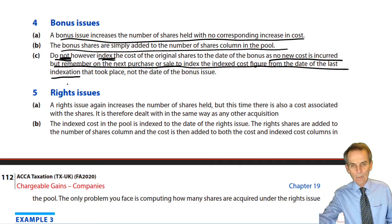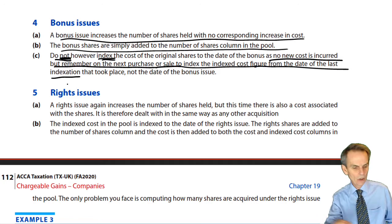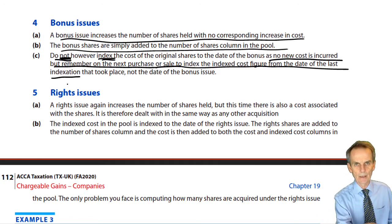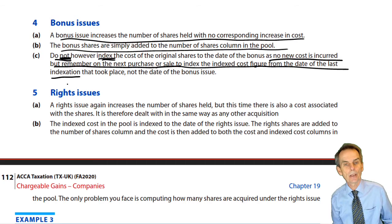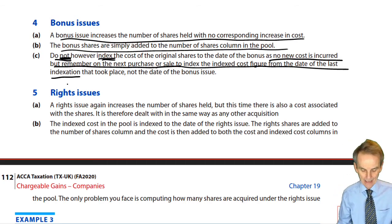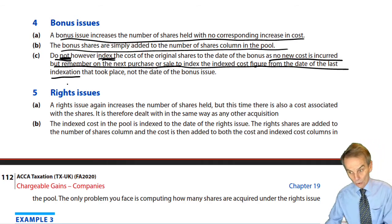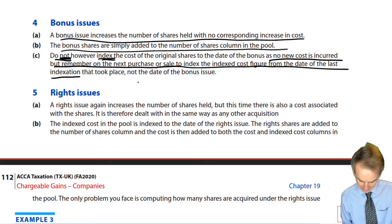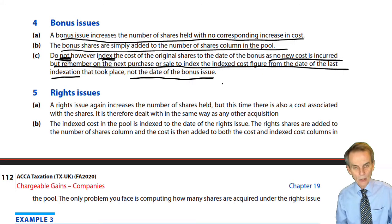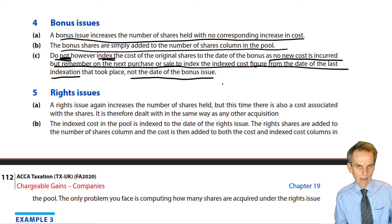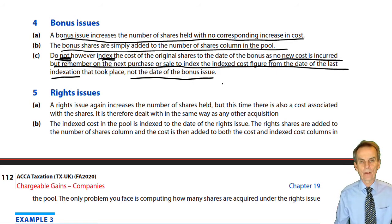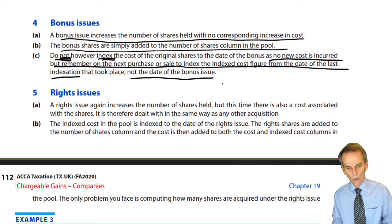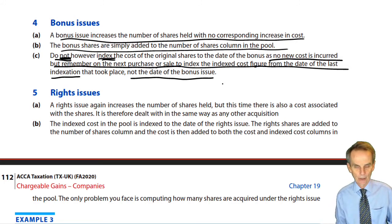Don't just look back to when the bonus issue occurred and treat that as the last re-indexation date. You re-index from the last date of any re-indexation all the way through to December 2017, if that comes before the disposal. We do not re-index from the date of the bonus issue because there was no re-indexation at that date. We go back to the previous operative event before it and re-index all the way through to the next operative event after the bonus issue.